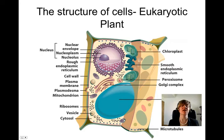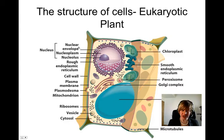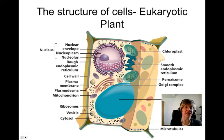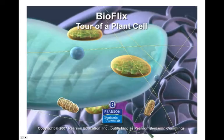That was our tour of the animal cell. Next, we're going to look at a plant cell, which will highlight some of the differences between the two types of cells. Both types of cells are eukaryotic — animals, plants, fungi, and protists all make up eukaryotic cells. Now let's go on to the plant cell tour.